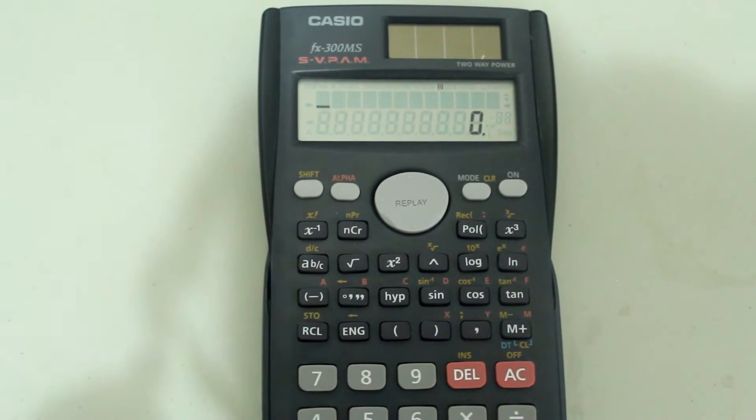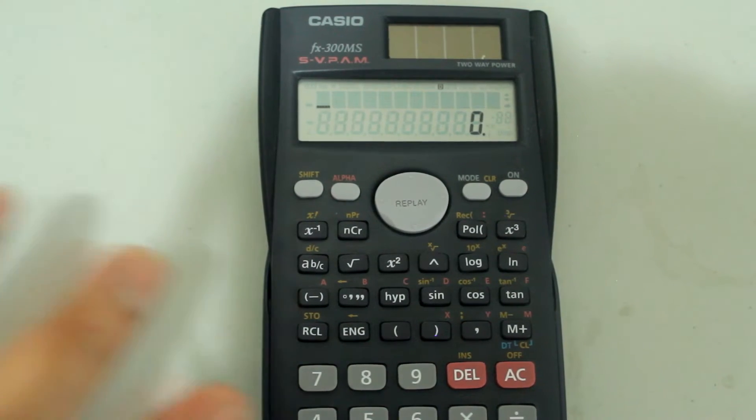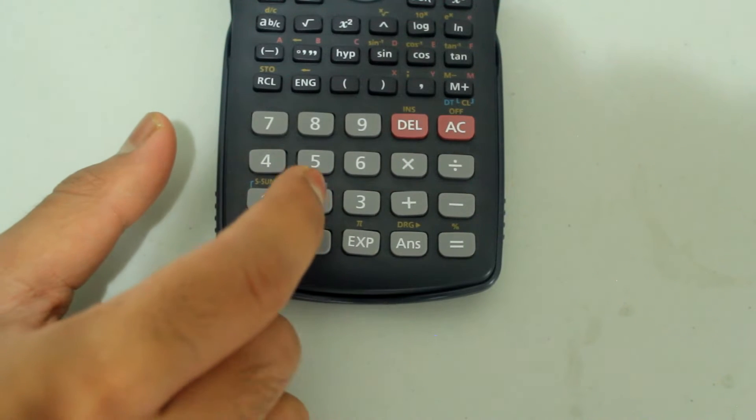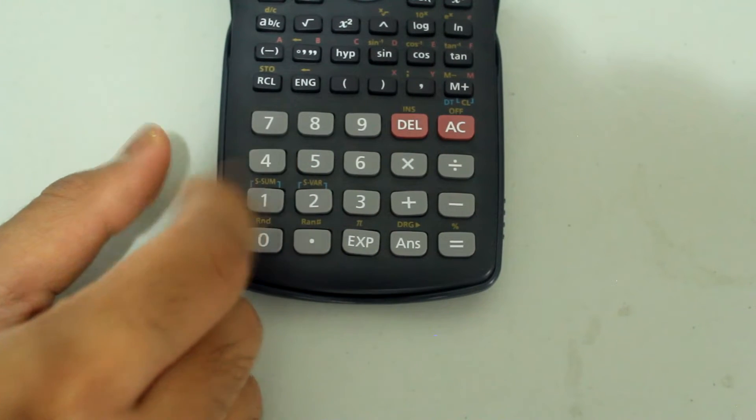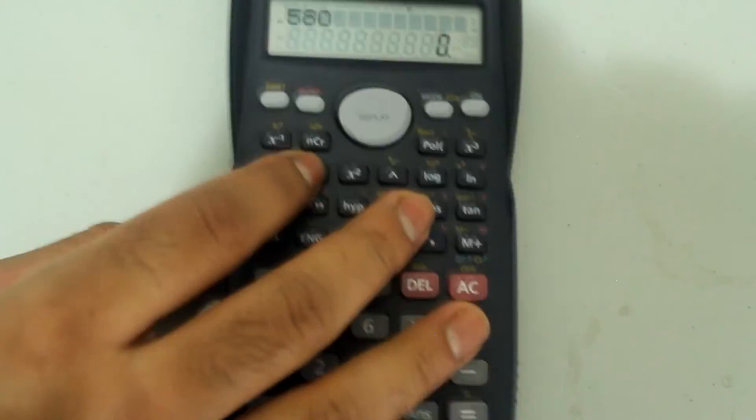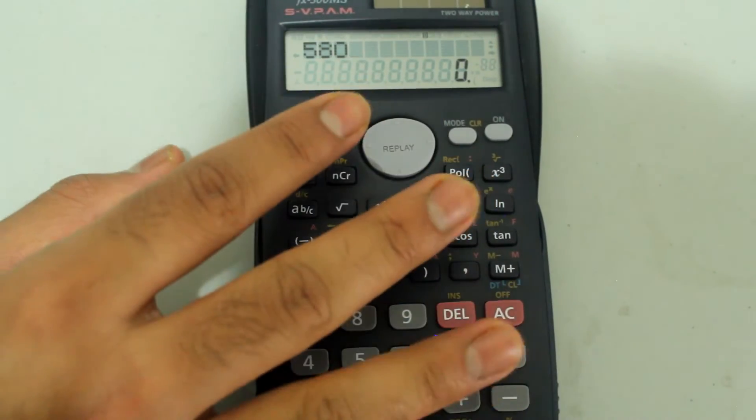In order to save a number as one of these letters, first just type in the number on the number pad. I am going to save 580 as the letter A. So just type in 580.